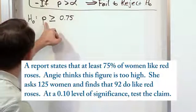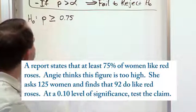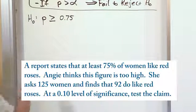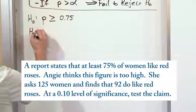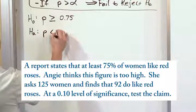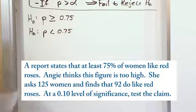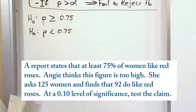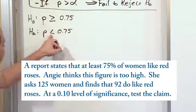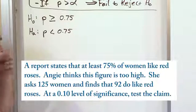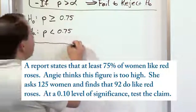The report states that the population of people more than or equal to 75% like red roses. Now the alternate hypothesis comes from Angie who doesn't think this is the case. She thinks that less than 0.75 or 75% of the people like red roses. Now notice this is a left hand arrow, so this is going to be a left tail test. So keep that in the back of your mind.